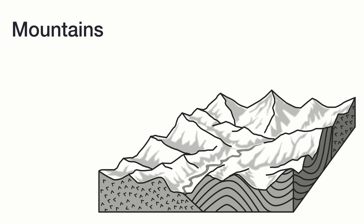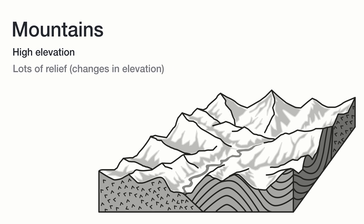Let's begin with mountains. Mountains tend to have a high elevation, meaning the landmass extends high above sea level and generally high above the surrounding land areas. Additionally, mountains have lots of relief and big changes in elevation between the peaks and the valleys.